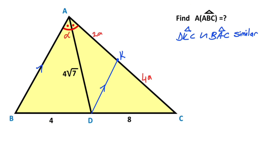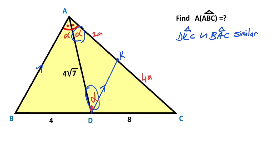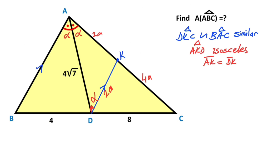Let's call these two equal angles alpha. Here must also be equal to alpha because of the parallel line. Next, if you focus on triangle AKD, notice that this triangle has the same base angles. That means triangle AKD is an isosceles triangle, so the length of AK must be equal to the length of DK.